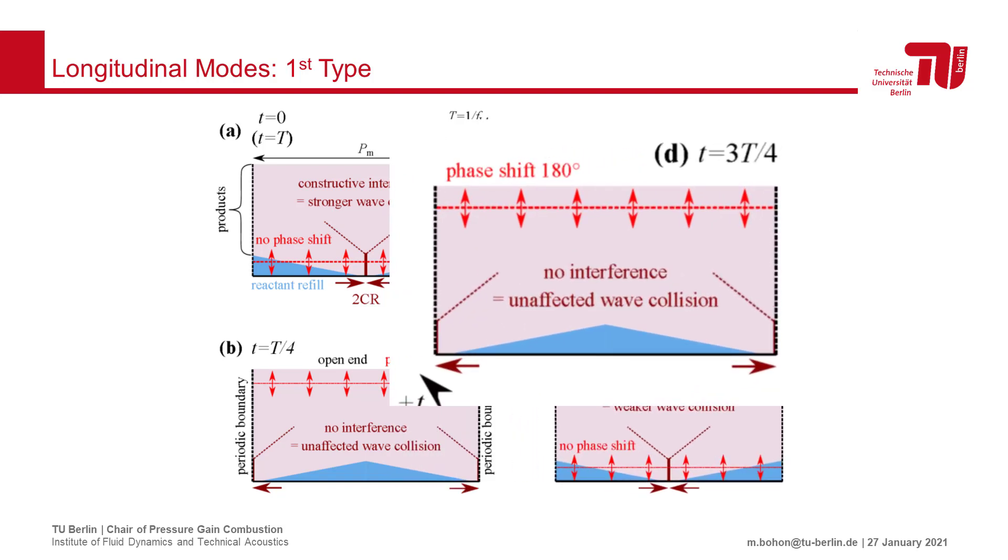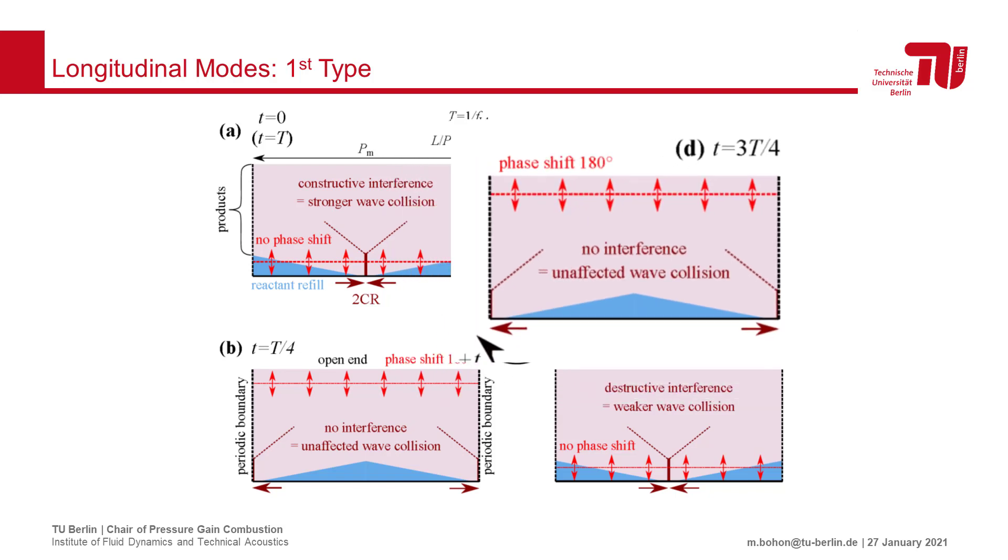The second half of the cycle follows the first, however, at three quarters of the longitudinal wave period, as the wave reaches the open end, it experiences another 180 degrees phase shift and returns as a stronger wave, thus completing the cycle.